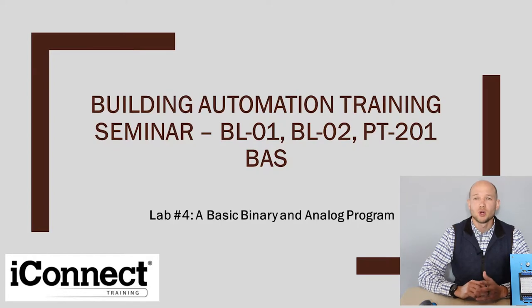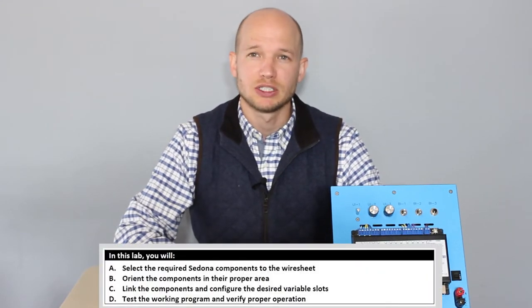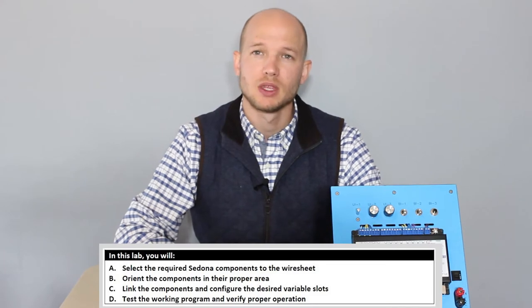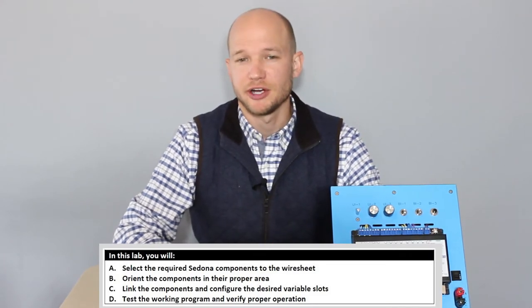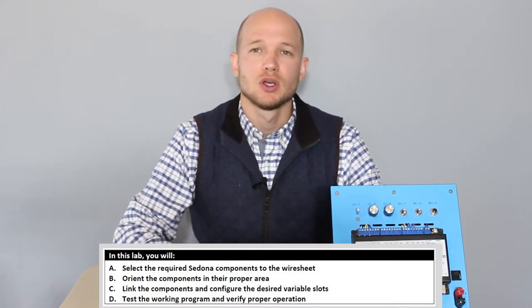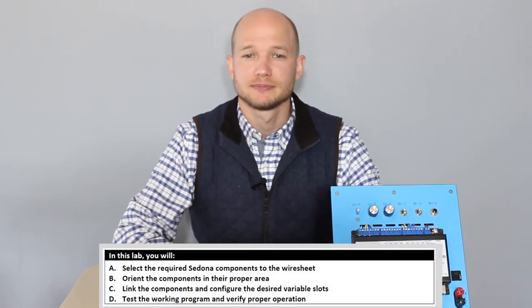In lab four we're going to be building a basic binary and analog program. We'll be utilizing the kits pane and dragging the selected components into the wire sheet. We'll orient those components in the proper area, we'll link the components and configure the slots, and then we'll test the program to make sure it works.